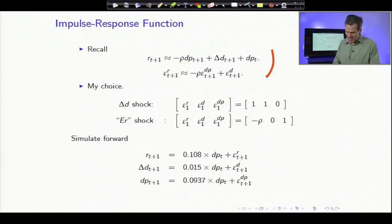I'm going to make a choice. This choice is informed by having run it every possible which way and knowing which is the prettiest answer. This is all interpretation, so it doesn't really matter which way you do it. My choice will be to have a dividend growth shock and a dividend yield shock, which I'll also call an expected return shock. They both satisfy the identity.